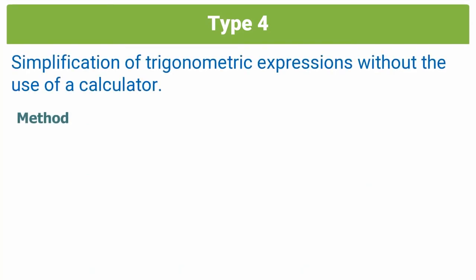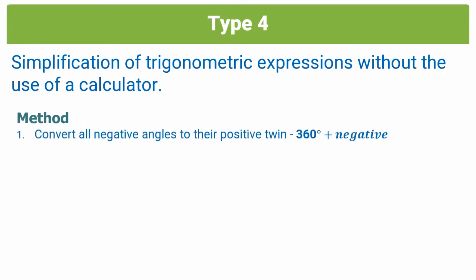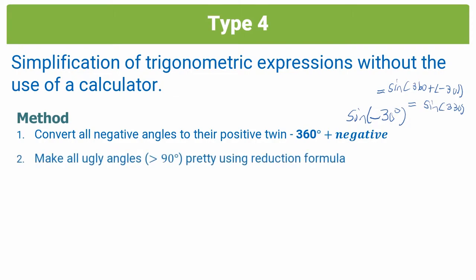Let's go on to our method for solving type 4 trig questions. Step 1: convert all negative angles to their positive twins using 360 plus the negative. So if you saw sine of negative 30 degrees, you'd take that and say it's equal to sine of 360 plus negative 30, giving you sine 330 degrees. Whenever you see a negative angle, convert it to its positive twin.